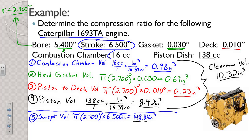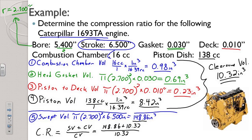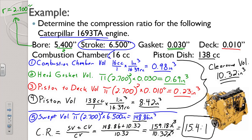Now that we have our swept volume and clearance volume, we can calculate the compression ratio. Compression ratio is swept volume plus clearance volume divided by clearance volume. So: 148.86 plus 10.32, added together, gives us 159.18 cubic inches divided by 10.32 cubic inches. Cubic inches cancels. Dividing that out gives you 15.41 — that's your compression ratio. That's high, but it makes sense because this is a diesel engine.